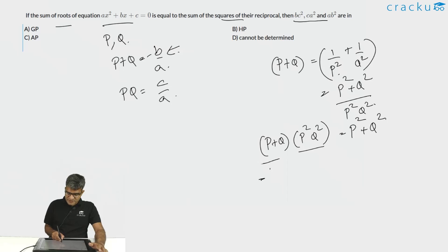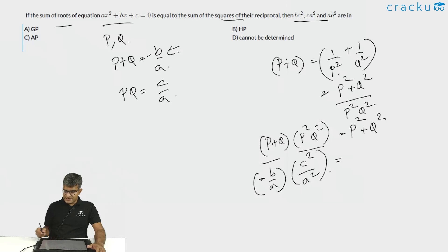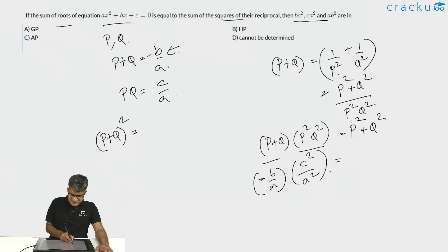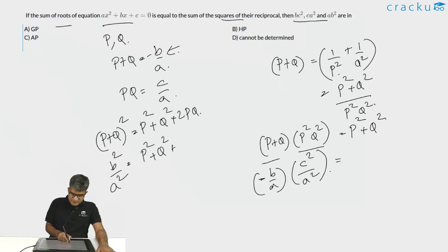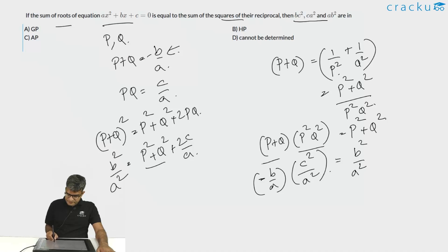The left-hand side is -bc²/a³. For the right-hand side, we need p² + q². We know (p+q)² = p² + q² + 2pq, so b²/a² = p² + q² + 2c/a. Therefore p² + q² = b²/a² - 2c/a.